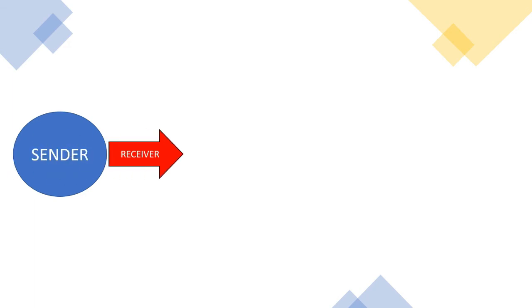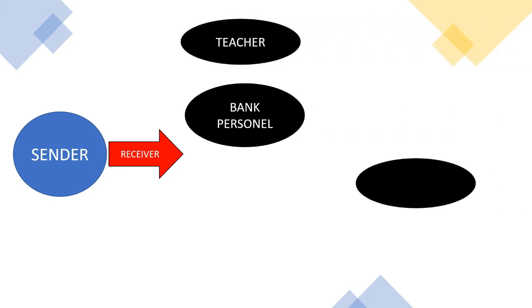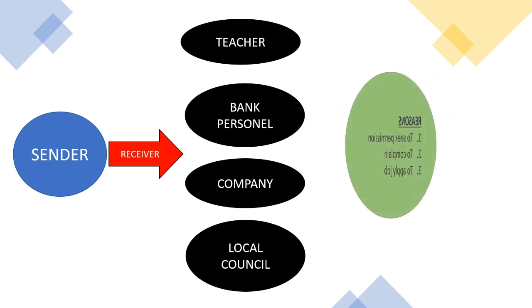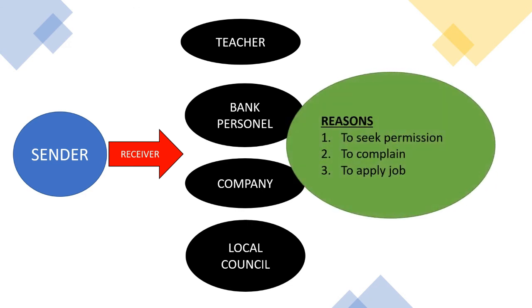Who should you send a formal letter to? A formal letter cannot simply be sent to anyone. As a sender, you send the letter to a receiver — mostly to your teachers, bank personnel, companies, and local council. The reasons? To seek permission, to complain, or to apply for a job. So if you want to send a letter to a friend just saying hi, an informal letter is the best way. Remember, formal letters should be sent to people such as teachers, bank, company, or local council.